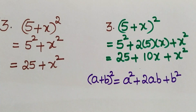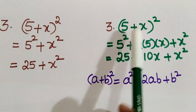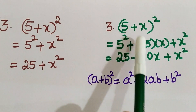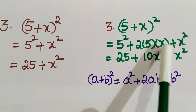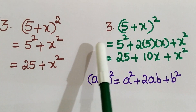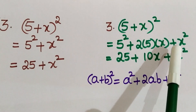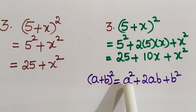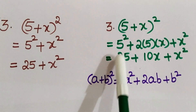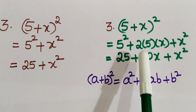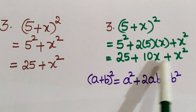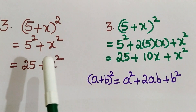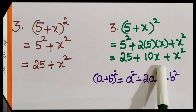We will see the correct procedure. (5 plus X) whole square can be written using the A plus B whole square formula: A squared plus 2AB plus B squared. Here 5 is the first term and X is the second term. So: 5 squared is 25, 2 into 5 into X is 10X, plus X squared. We will have 3 terms when there is a square. This is the correct procedure.